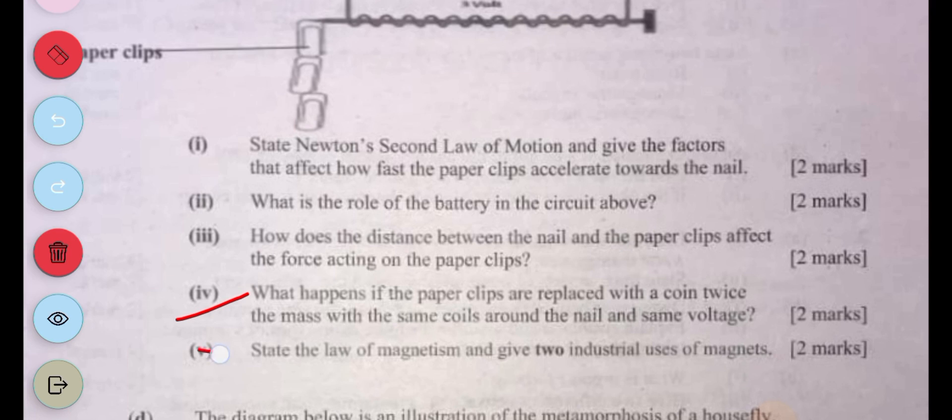Question five: State the law of magnetism and give two industrial uses of magnets. The law of magnetism: like poles repel, unlike poles attract. Uses of magnets include magnetic levitation trains and sorting and recycling of ferrous materials.